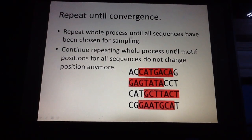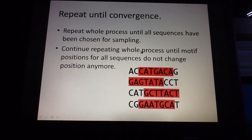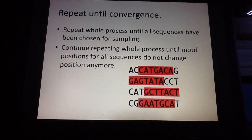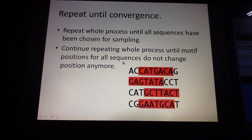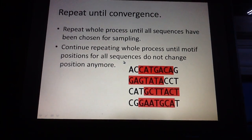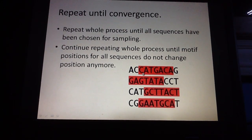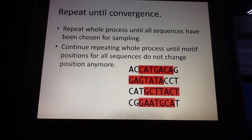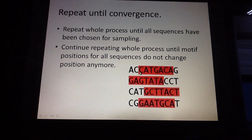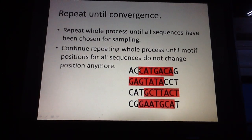And once we iterate through all of these sequences, we proceed with a continuing process of repeating the whole thing all over again, and eventually we hope to obtain some kind of convergence — meaning that the positions we obtain for the first sequence, the second sequence, the third, and the fourth somehow stop moving. When they stop moving, we say that convergence has happened, and these are probably the best motif positions for the motifs.